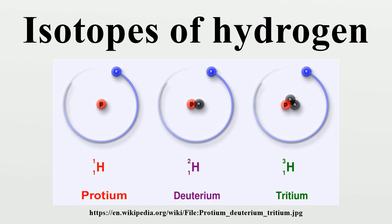Hydrogen-4 (4H) contains one proton and three neutrons in its nucleus. It is a highly unstable isotope of hydrogen. It has been synthesized in the laboratory by bombarding tritium with fast-moving deuterium nuclei. In this experiment, the tritium nucleus captured a neutron from the fast-moving deuterium nucleus. The presence of hydrogen-4 was deduced by detecting the emitted protons. Its atomic mass is 4.02781 ± 0.00011. It decays through neutron emission into hydrogen-3 with a half-life of about 139 yoctoseconds (×10^−22 seconds).